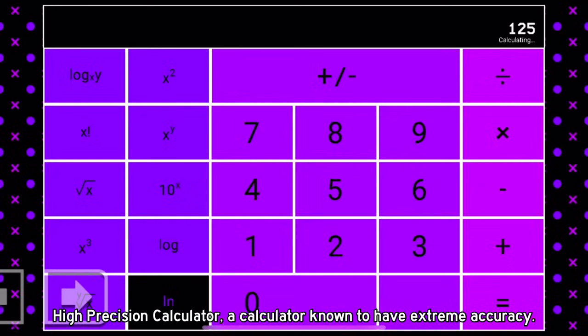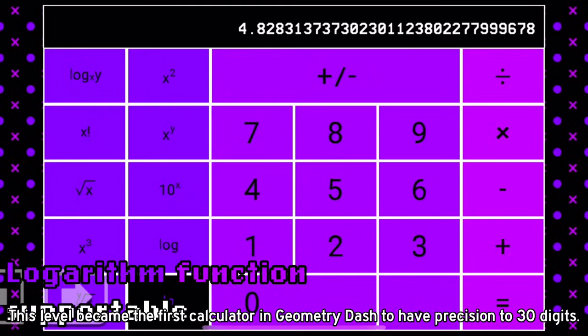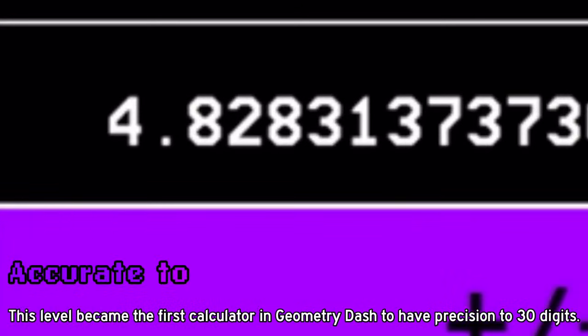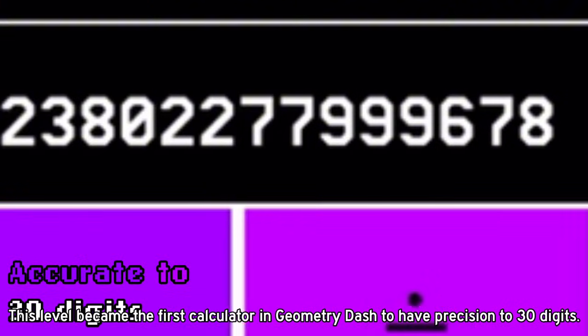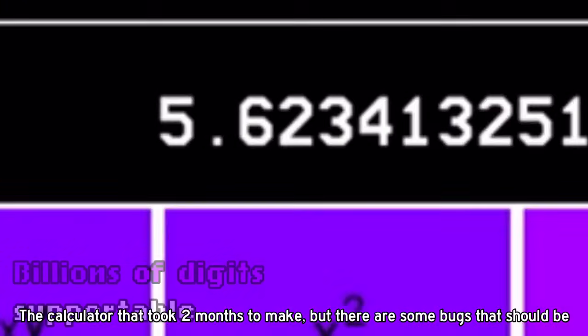High Precision Calculator, a calculator known to have extreme accuracy. This level became the first calculator in Geometry Dash to have precision to 30 digits. The calculator took 2 months to make, but there are some bugs that should be patched.